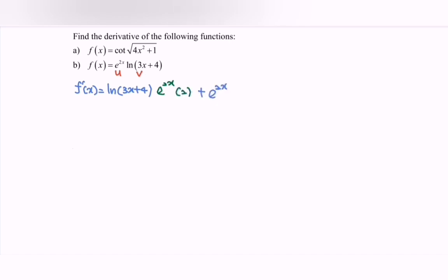Plus exponent 2x, differentiate the ln, and we will have 1 over (3x + 4). Differentiate the internal function, and we have 3.